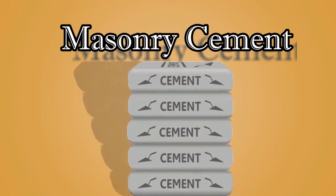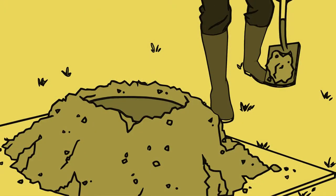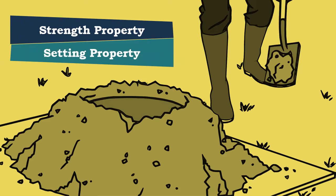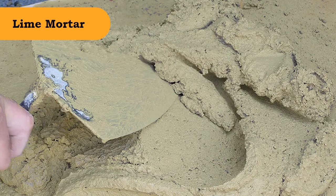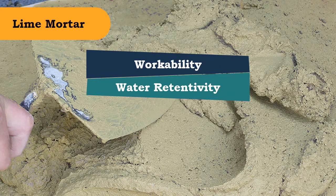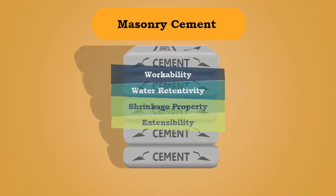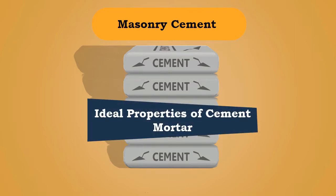Masonry cement was developed because ordinary cement mortar, while good in strength and setting properties, is inferior to lime mortar in workability, water retentivity, shrinkage property, and extensibility. Masonry cement was therefore discovered to incorporate the good properties of lime mortar while discarding the undesirable properties of cement mortar.